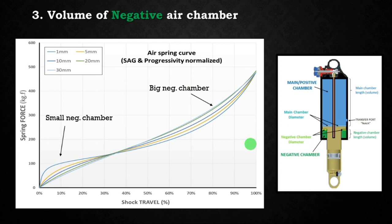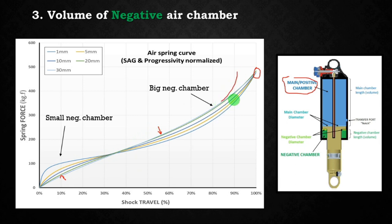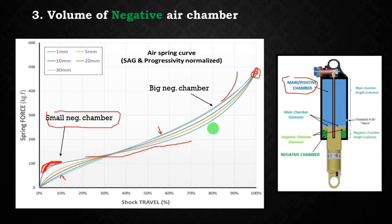I built a new graph similar to the previous one, but now I also changed the main chamber volume to keep the same bottom-out force across configurations. This graph shows that a big negative air chamber is softer, has more mid-stroke support, and doesn't need as much ramp-up at the end to reach the same bottom-out force. A small negative chamber has initial shoulder stiffness, then a flat mid-travel, and requires more ramp-up at the end to achieve the same bottom-out force.